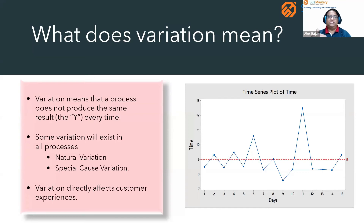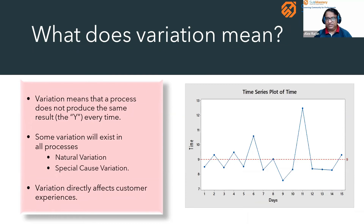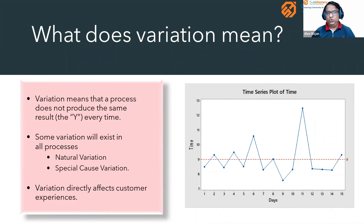Whenever special cause variation increases, it leads to more defects in the process — equipment breakages, mistakes, and errors. This affects the customer experience. When there are more special cause variations, the process experiences more defects and customer dissatisfaction. That is why, in Lean Six Sigma process improvement methodology, we identify what type of variations exist and whether special cause variations are present. There are tools that help us identify them.